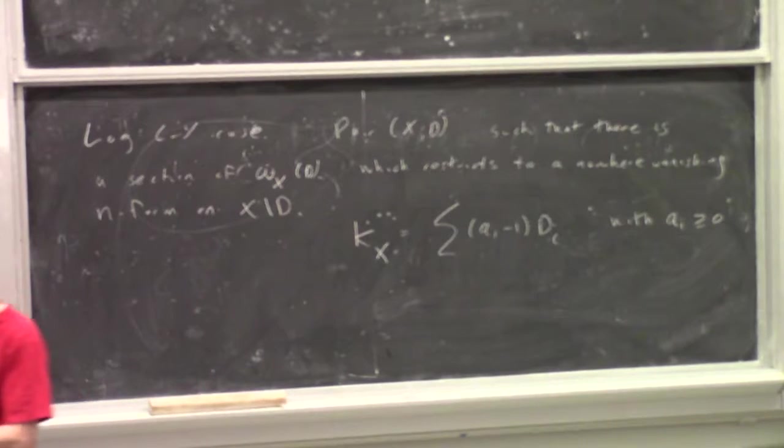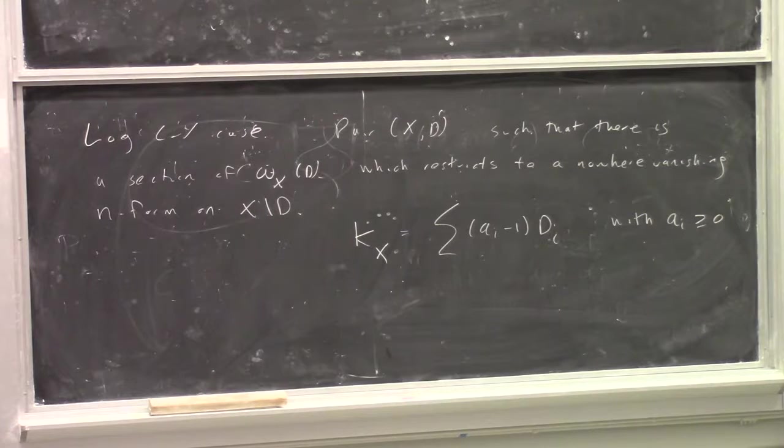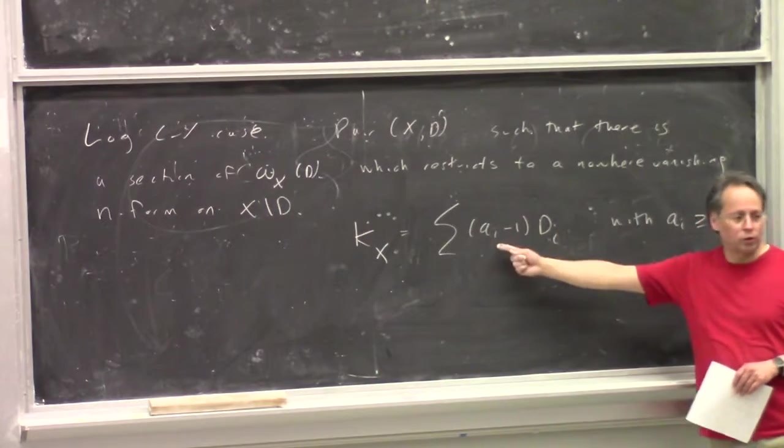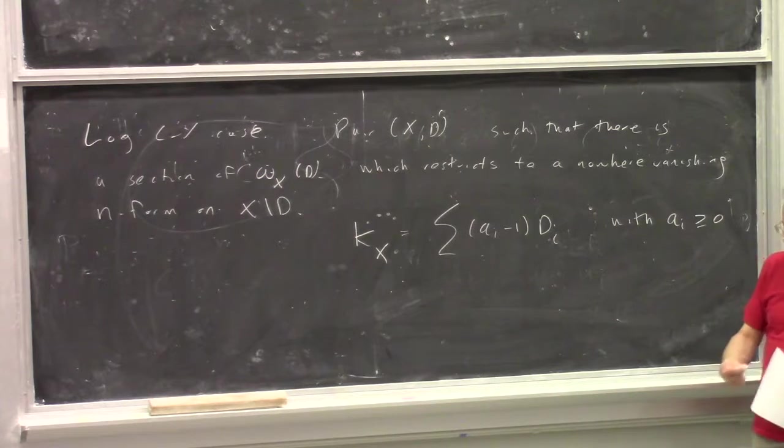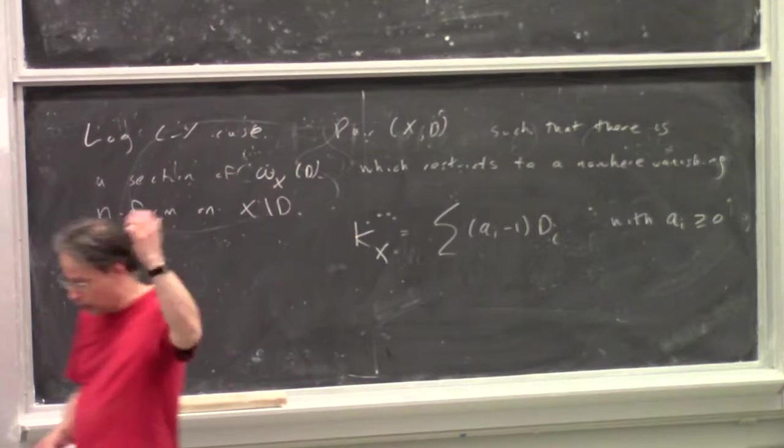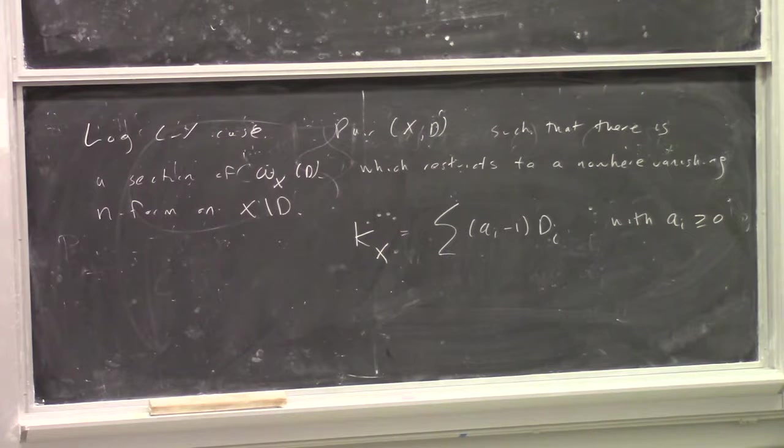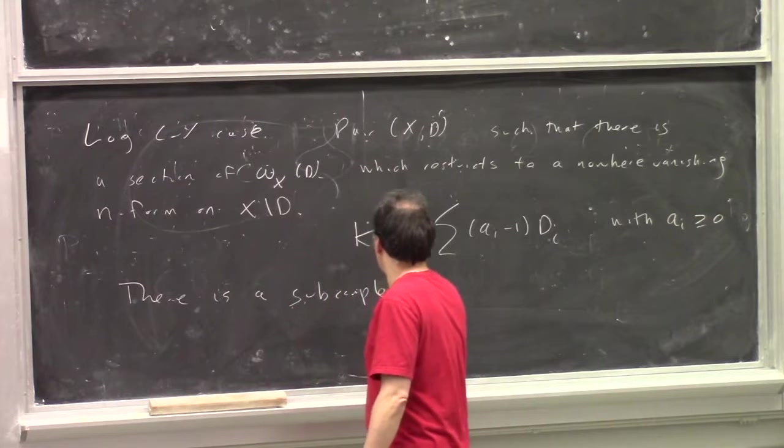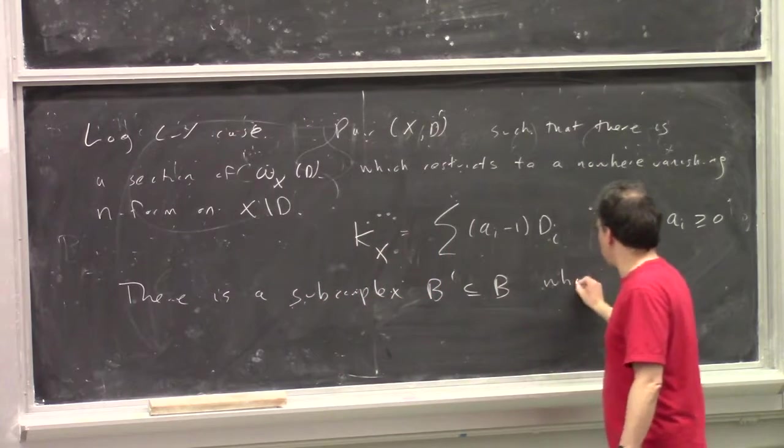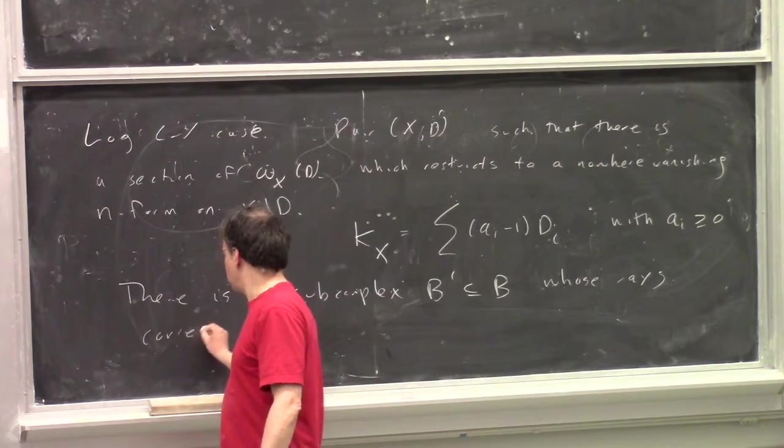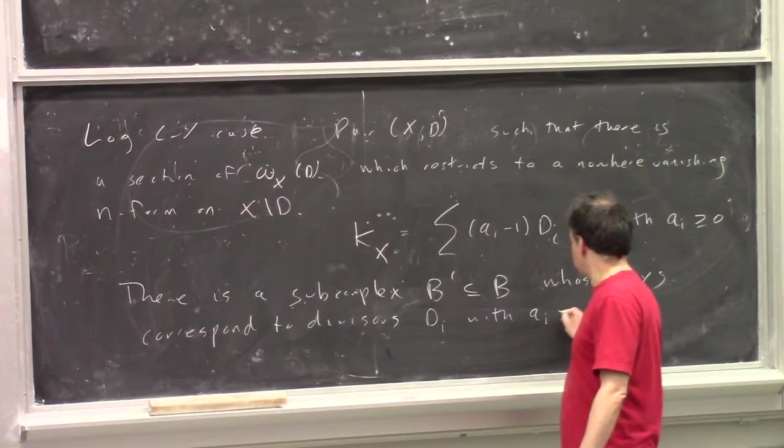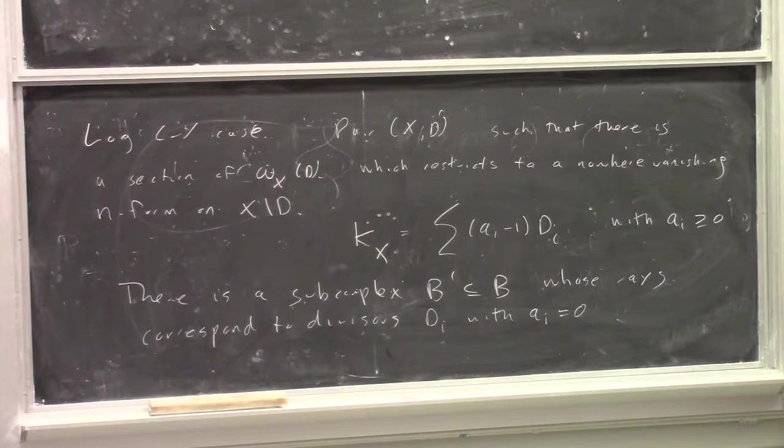You can look at the holomorphic forms which are allowed to have one pole along D. A section of omega_X(D) which restricts to a nowhere-vanishing n-form on X minus D. So that's going to be my definition of log Calabi-Yau. So one thing that tells us is that, in fact, the canonical class K_X is some summation a_i minus 1 times D_i, where the a_i's are greater or equal to 0.